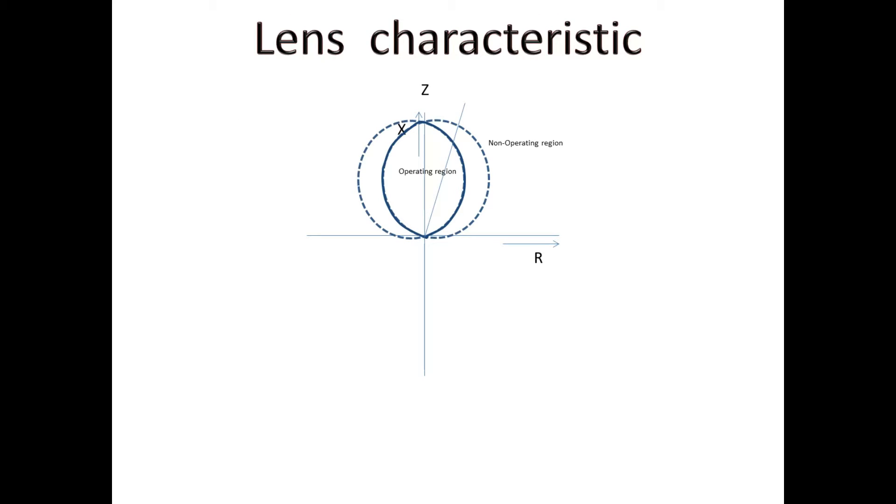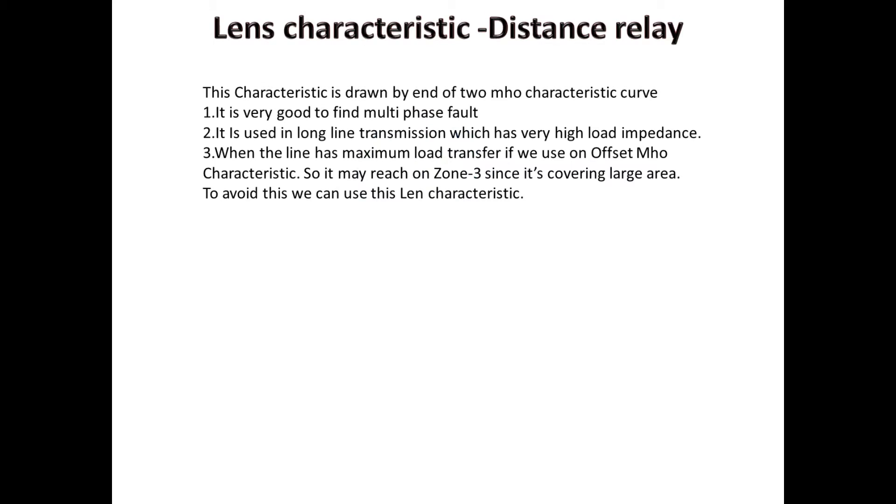Now, we move to next, lens characteristics. This characteristics is drawn by intersection of two MOH characteristics curves. If you see the advantage of this characteristics, it is very good to find multi-phase fault.